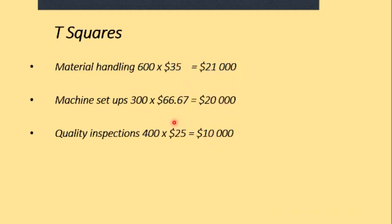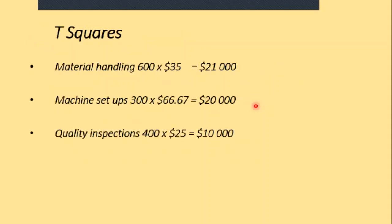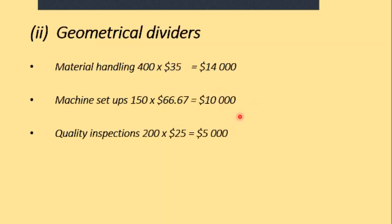Moving on, the total assigned costs: we add up the three activities for each product. We get $29,000 for geometrical dividers and $51,000 for T-squares. We can see where it's coming from: for T-squares, $21,000 + $20,000 + $10,000; and for geometrical dividers, $14,000 + $10,000 + $5,000.